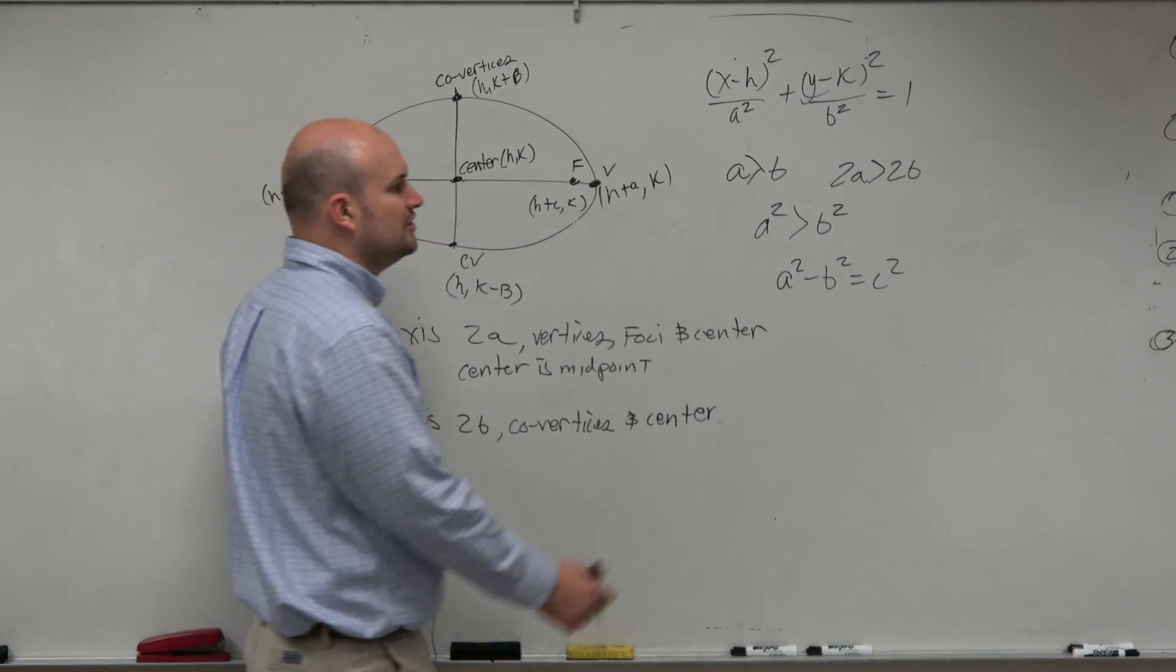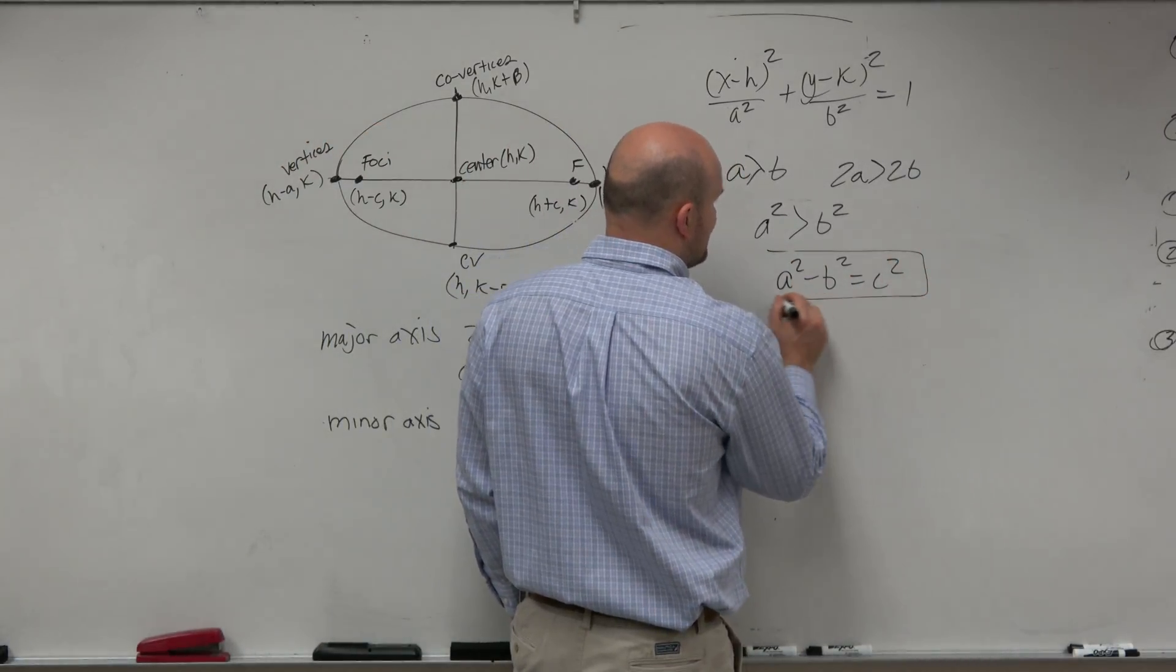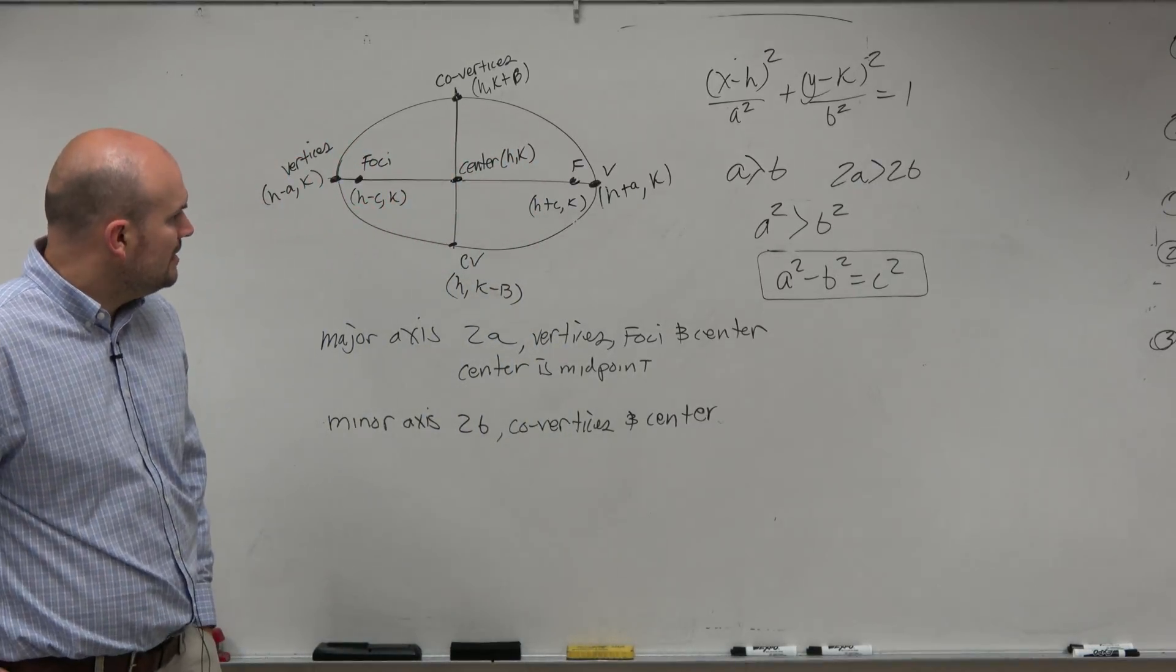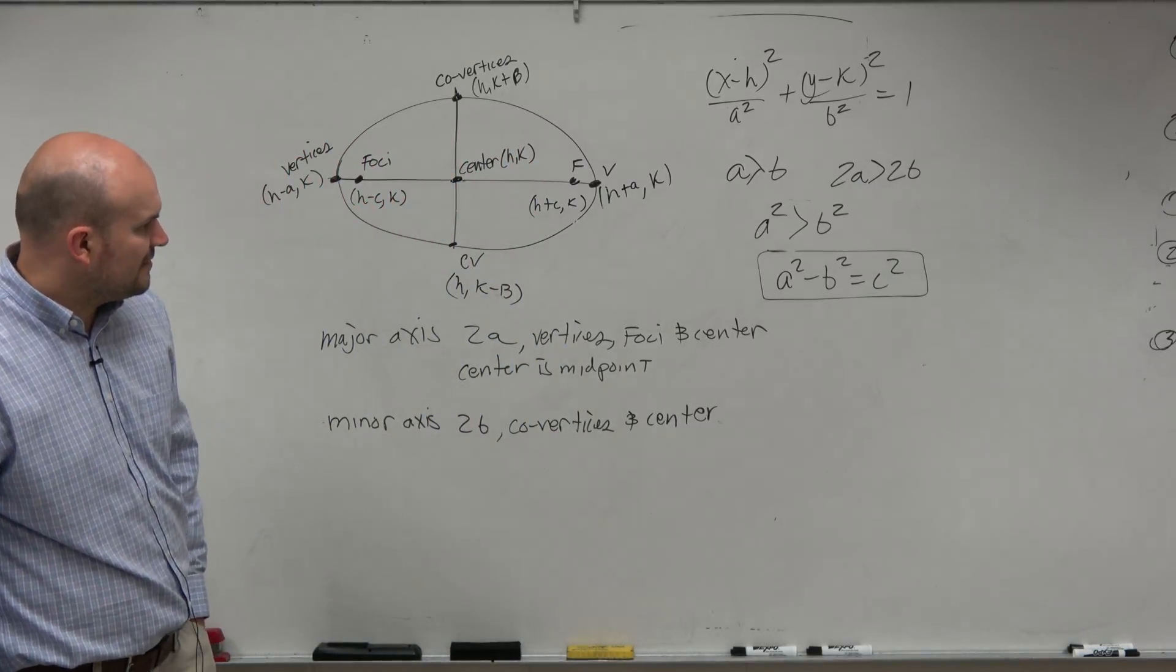A squared minus b squared equals c squared. So that was just a relationship we could use. Because if you're given two of those variables, ladies and gentlemen, you can find for the third one. Let's see. What other things do we need to remember?